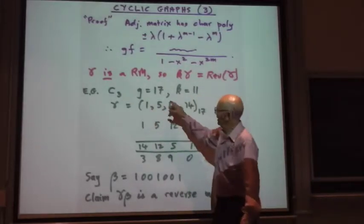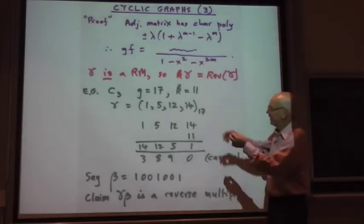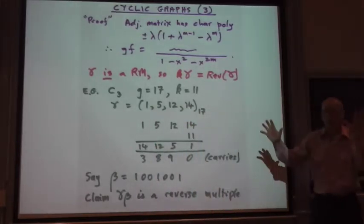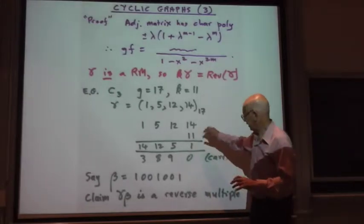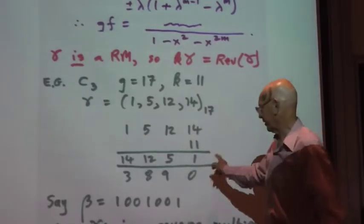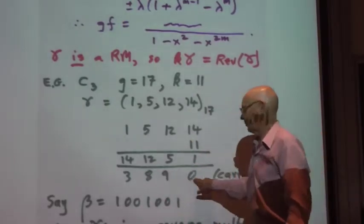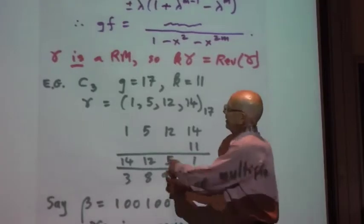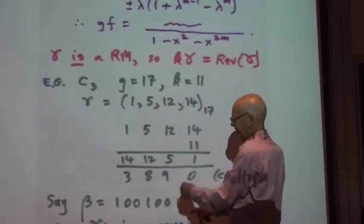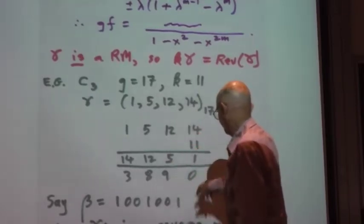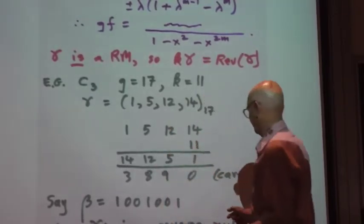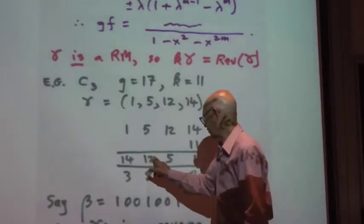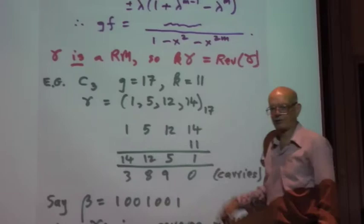The cyclic 1C3, the first example is base 17 multiply by 11, and if you read it off the diagram, you get gamma is 1, 5, 12, 14, to the base 17. Now, watch what happens when we multiply by 11. So we're doing calculations mod 17, but because we can also read off the carry digits, we don't really have to work very hard. So we say 11 14s is 154, which is 9 times 17 plus 1. So the carry is 9. 11 times 12 is, plus 9 is 141, which is 8 times 17 plus 5, and so on. And we get 1, 14, 12. We get 14, 12, 5, 1, which is the reverse of what we started with.